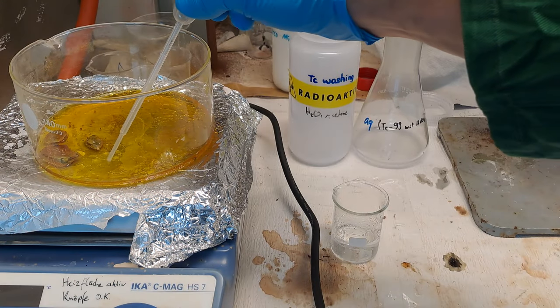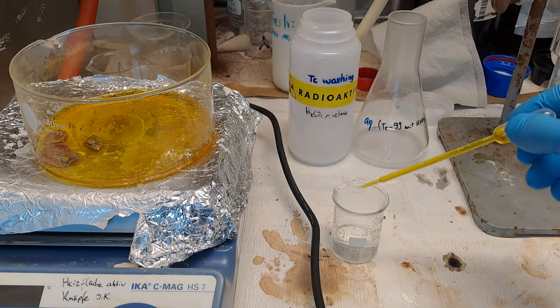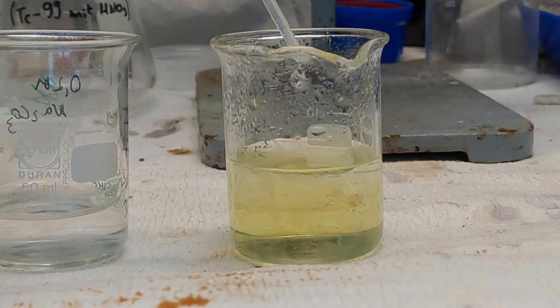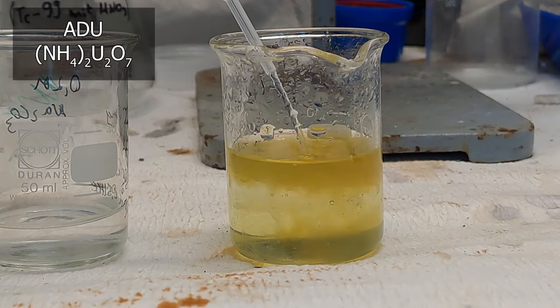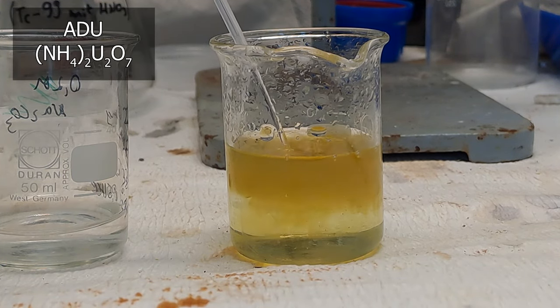Of course, when you have a uranium solution, you should take the opportunity to do something with it. To a dilute sample, we add some concentrated ammonia solution and in the alkaline ammonia environment, a yellow solid called ammonium diuronate forms.